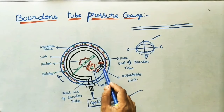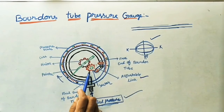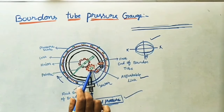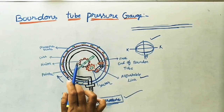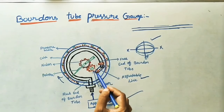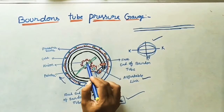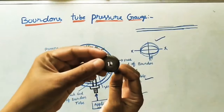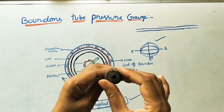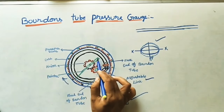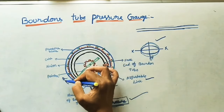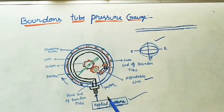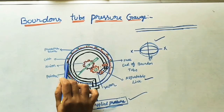The other end of the Bourdon tube is the free end. This free end is connected to an adjustable link, which is in turn connected to a sector and pinion arrangement. The sector is one-fourth of a circle with teeth on its surface; these teeth coincide with the teeth of the pinion. When the adjustable link moves, the sector moves, rotating the pinion, which is connected to a shaft. The shaft rotates a pointer over a circular scale marked with values such as 5, 10, 15, 20, 25 in bar or newton per meter square.